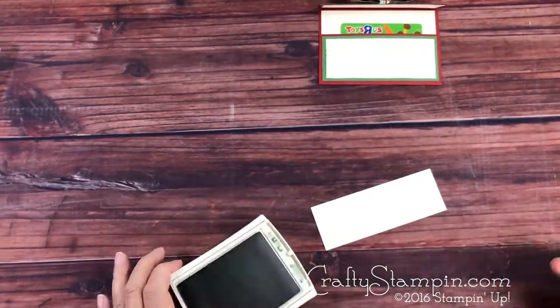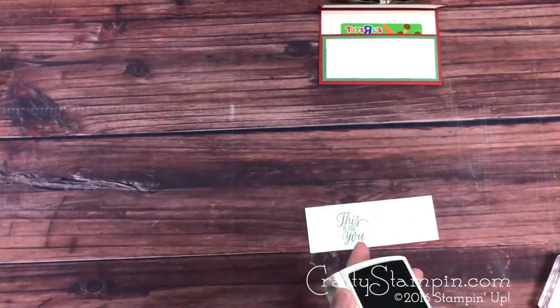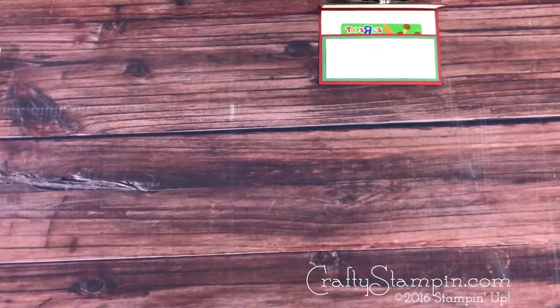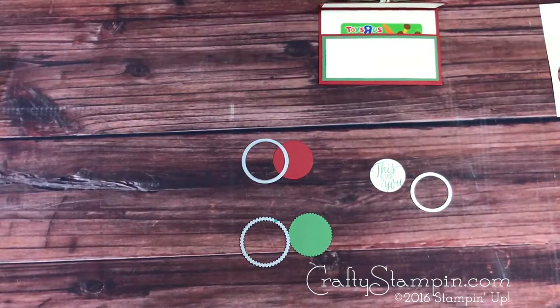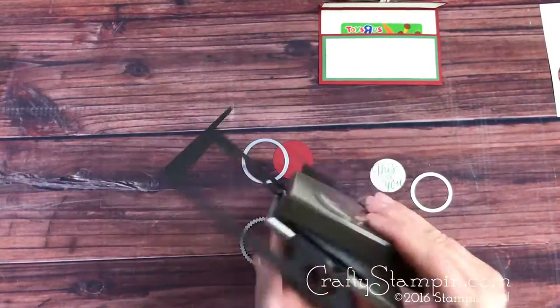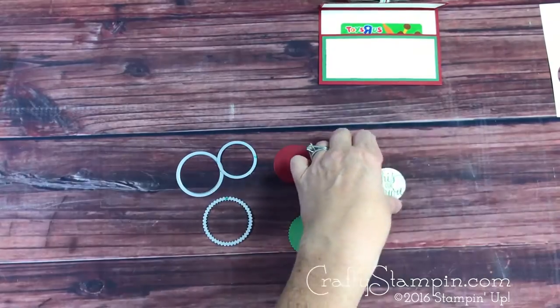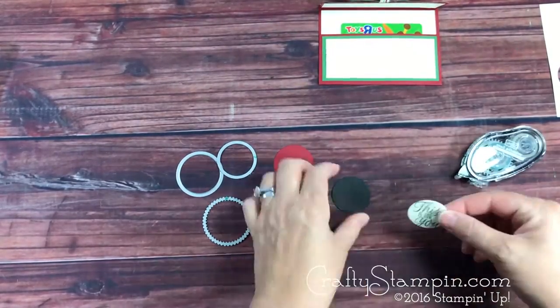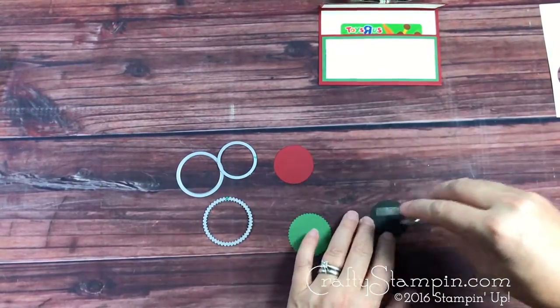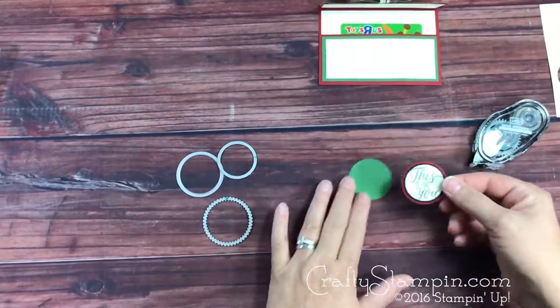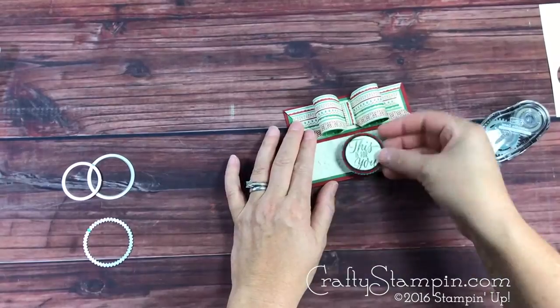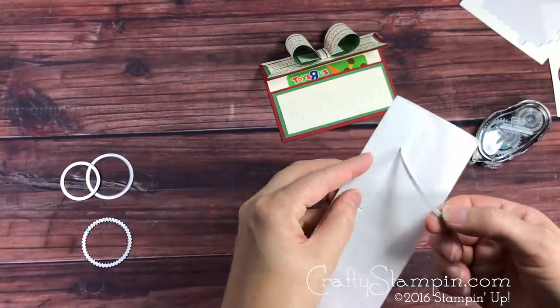We're going to make the tag that's going to hold it closed. We're using the tin of tags photopolymer set and several circles from the layered circles die and a 1.5 inch punch to create the layers for this closure. They're all going to be attached together with some snail.